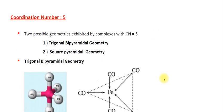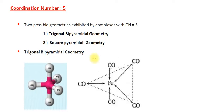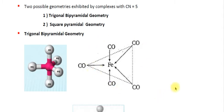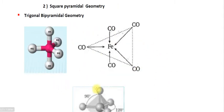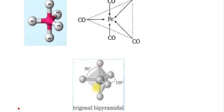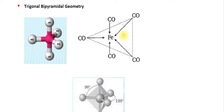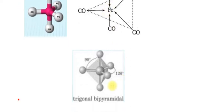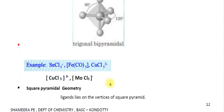Coordination number 5 has two possible geometries: trigonal bipyramidal geometry and square pyramidal geometry. In trigonal bipyramidal geometry, the angles that exist are 120 degrees and 90 degrees — the equatorial angle between the ligands in the plane is 120 degrees and the axial-equatorial angle is 90 degrees. Examples include [SnCl₅]⁻, Fe(CO)₅, [CuCl₅]³⁻, and [MoCl₅]⁻.